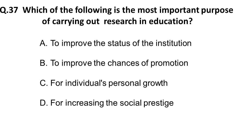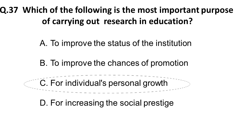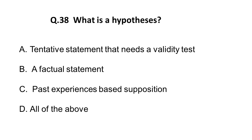Question 37: Which of the following is the most important purpose of carrying out research in education? Options: A) to improve the status of the institution, B) to improve chances of promotion, C) for individual's personal growth, D) for increasing social prestige. The correct answer is C: for individual's personal growth.